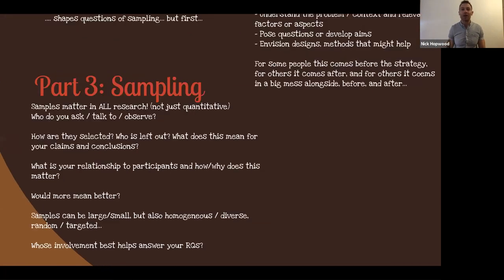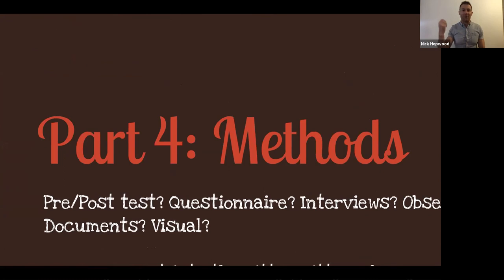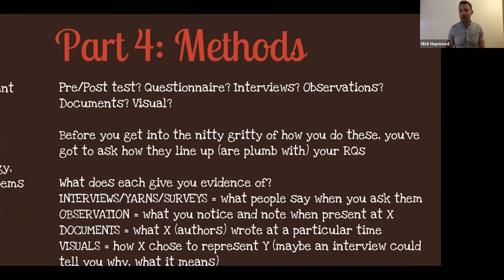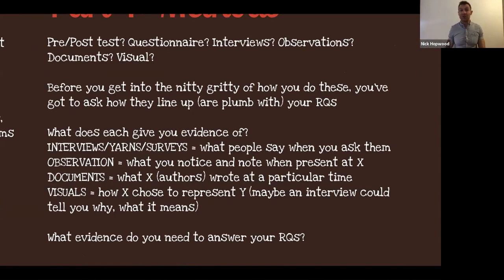Part four of the five-part framework: methods. This is not methodology, which is the theory of methods or the study of methods. This is how you get your data. You could use pre and post tests if you want to see if people get better at something before and after an intervention. You might use a questionnaire, you might do interviews, observations, you might collect documents, you might use visual methods. Before you get into the nitty-gritty of how you do these, you've got to check that they line up. Do your plumb line test, check they line with your questions, your theoretical framework, and so on.